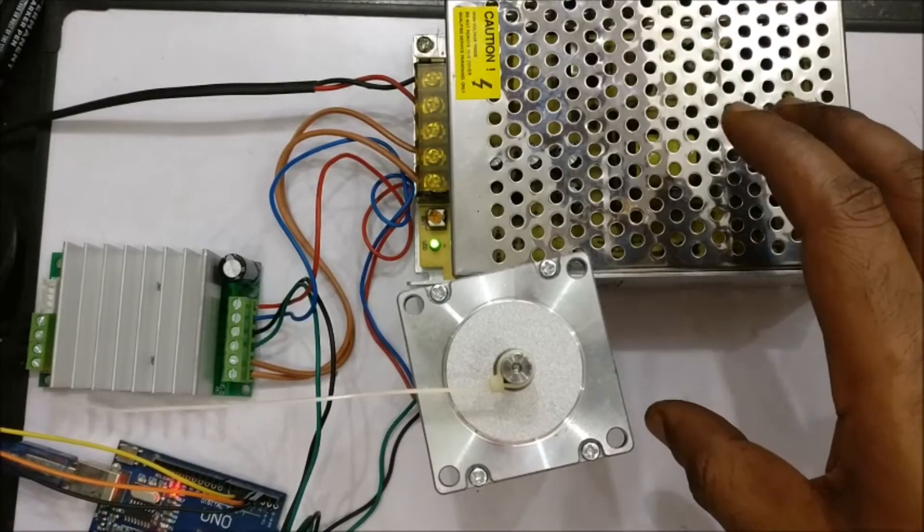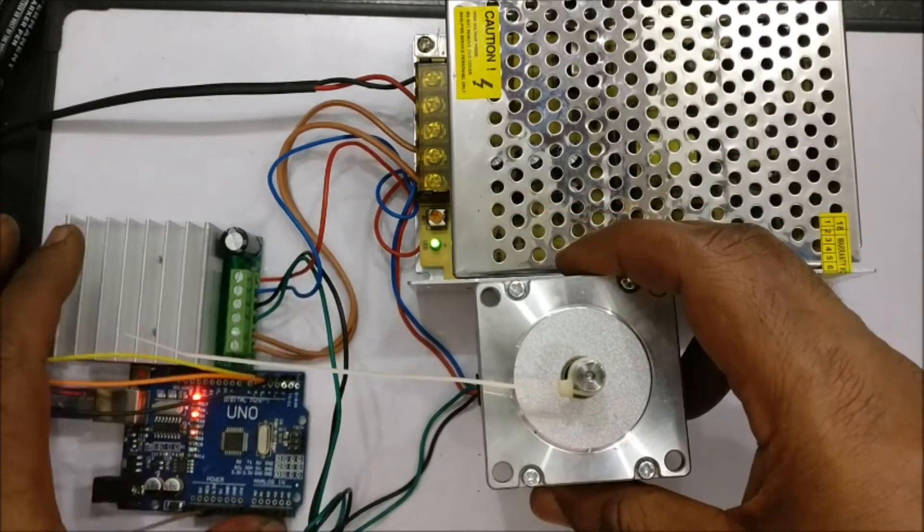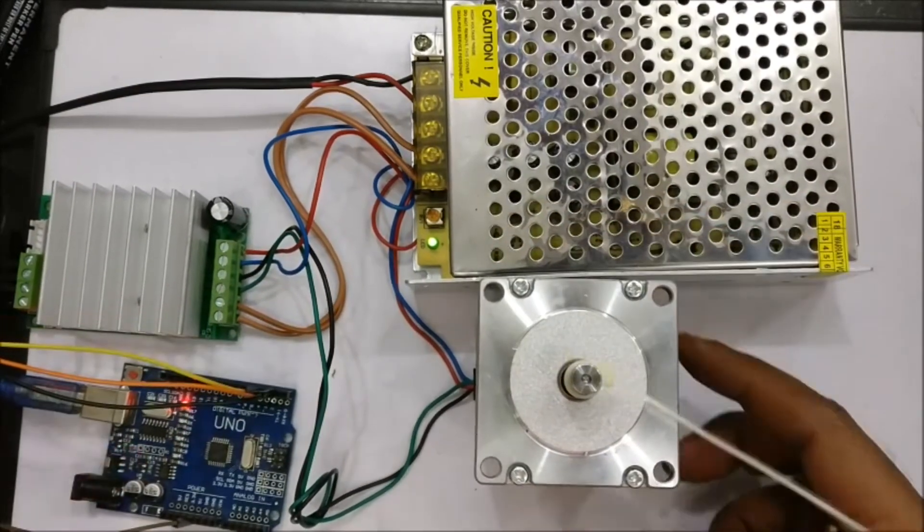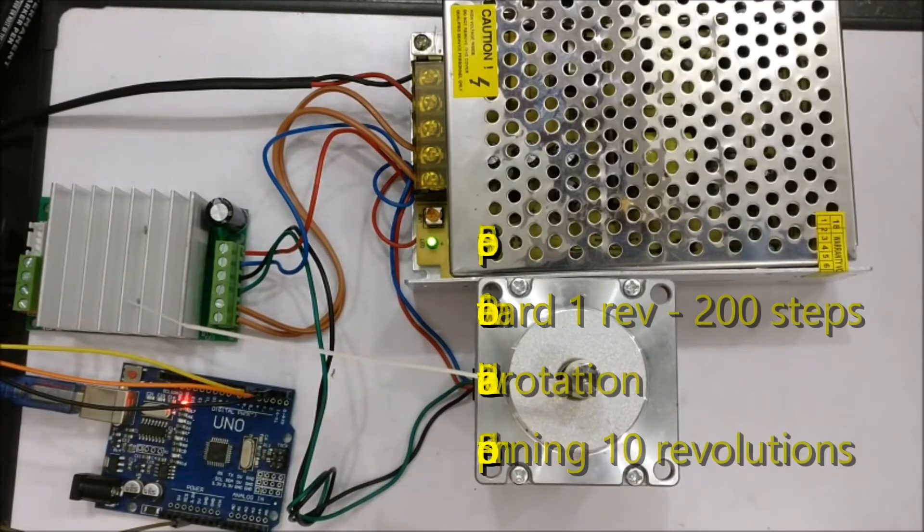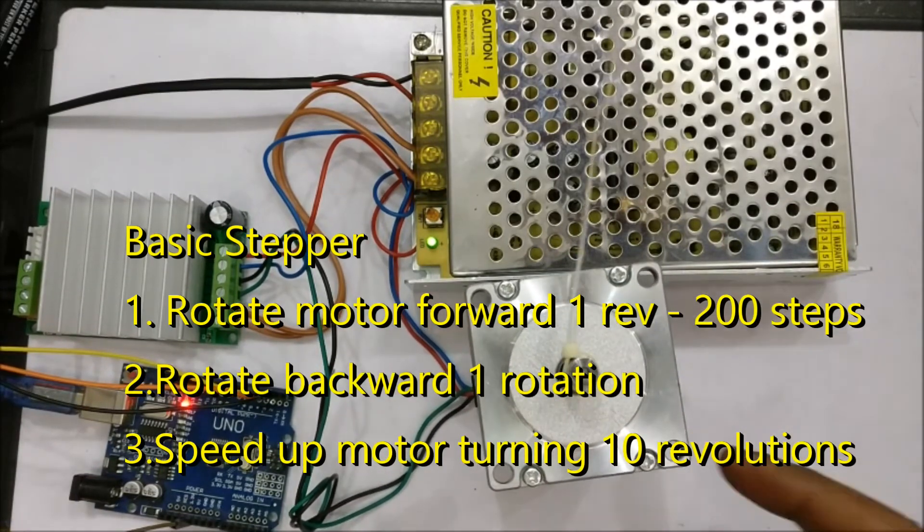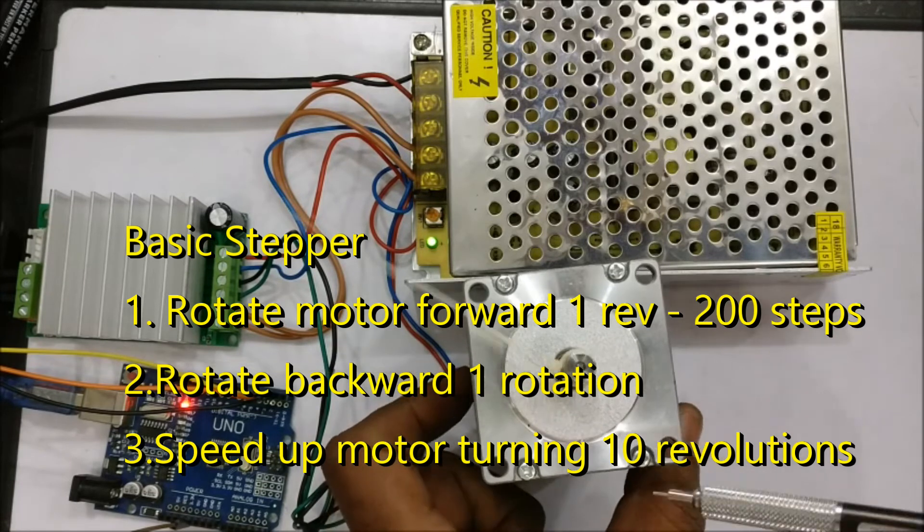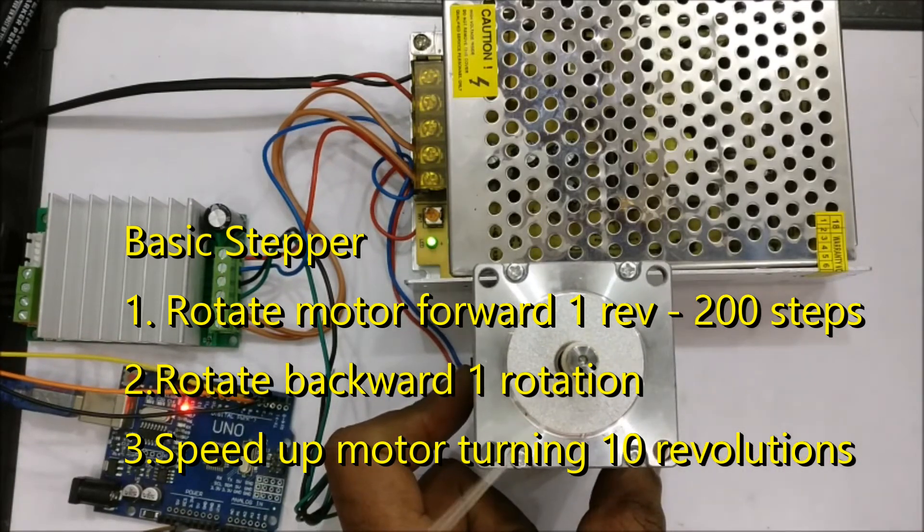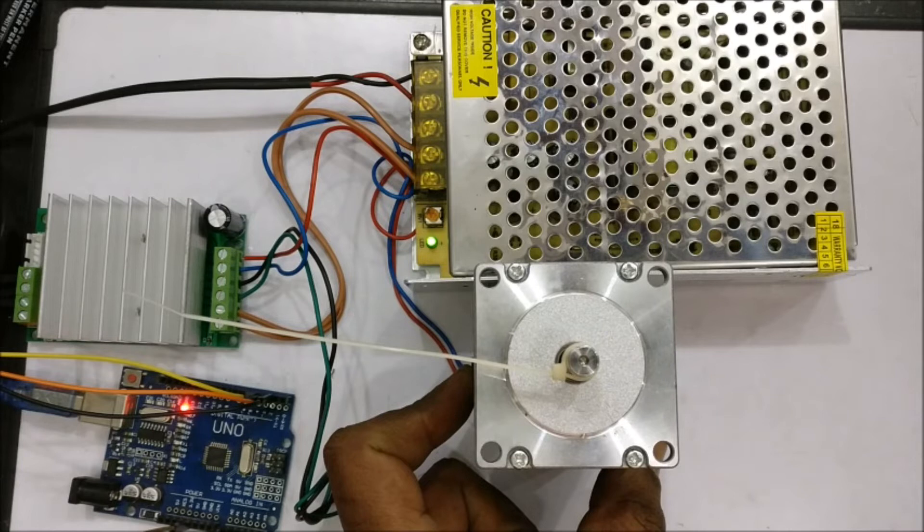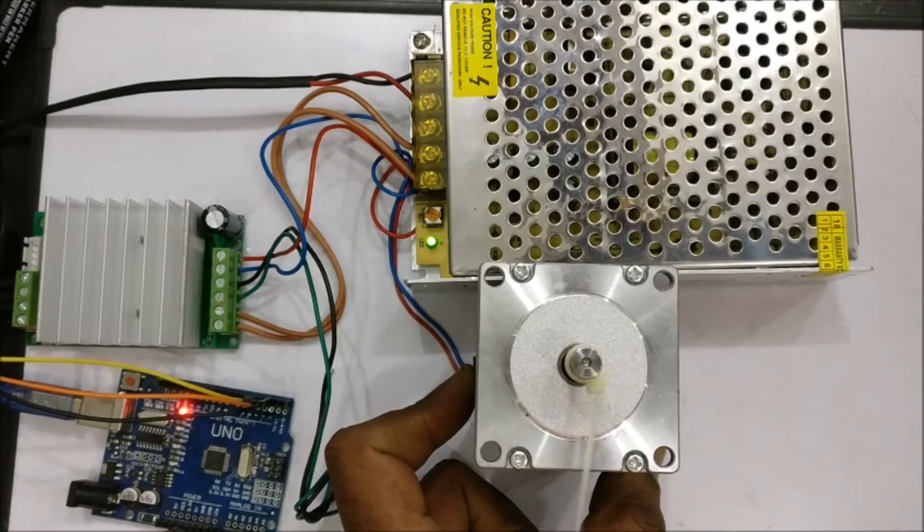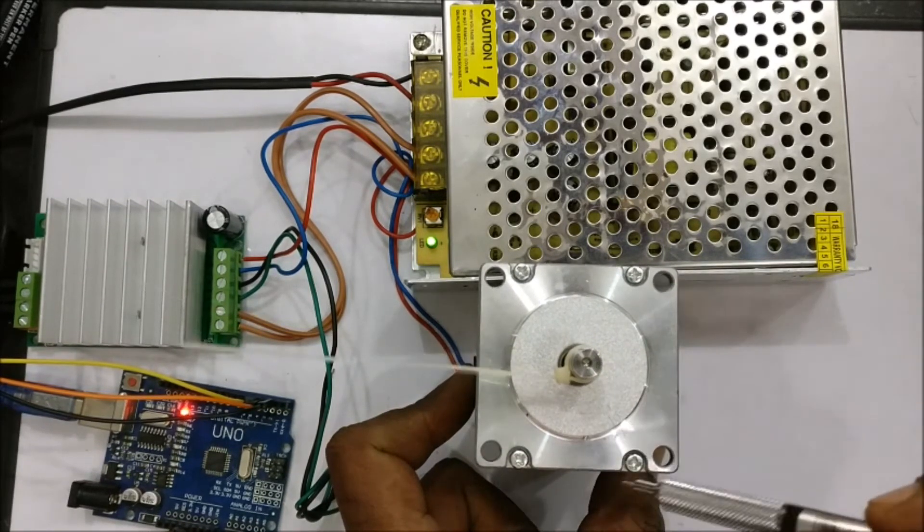Upload the code and see the result. One clockwise direction, one anticlockwise. And then motor speed increases and rotates 10 times. As we are using it in loop, it will go on forever.